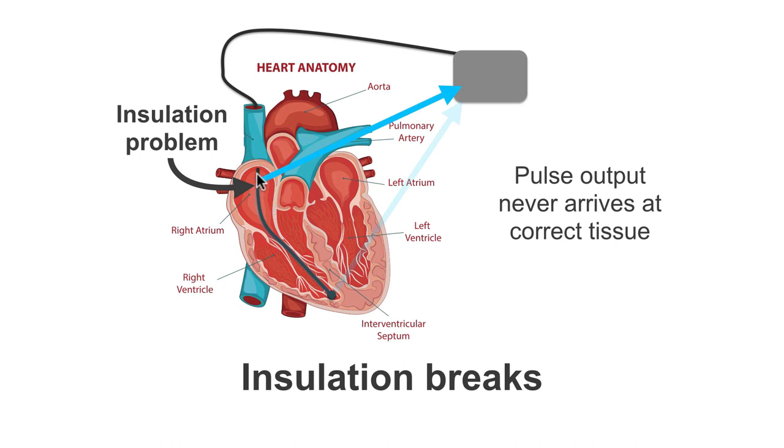If we have an insulation brake, the electrical signal sees an opportunity to take a shortcut. It will leave the circuit at the point of the insulation brake, and travel back to the other electrode. Again, when this occurs, the pulse output never arrives at the correct tissue, and so, in this instance, we would probably get failure to capture.